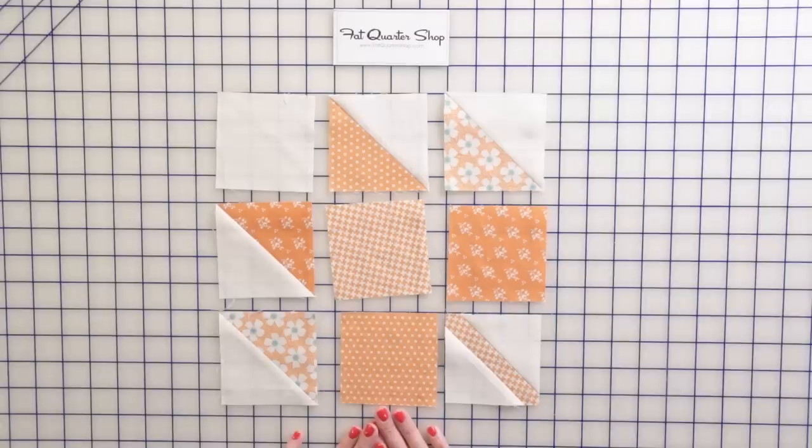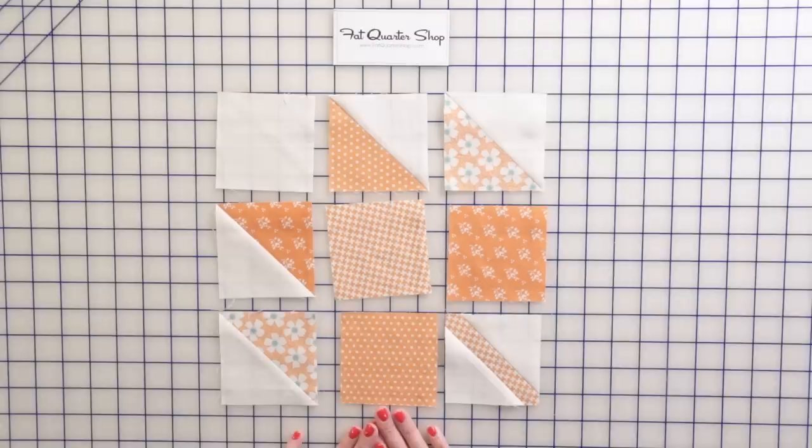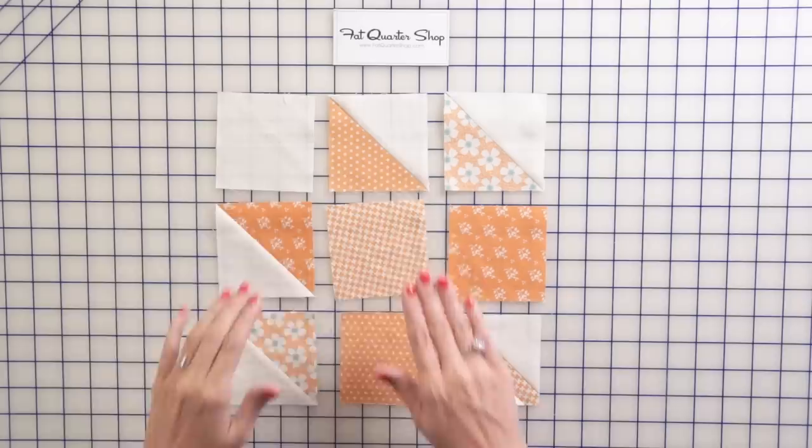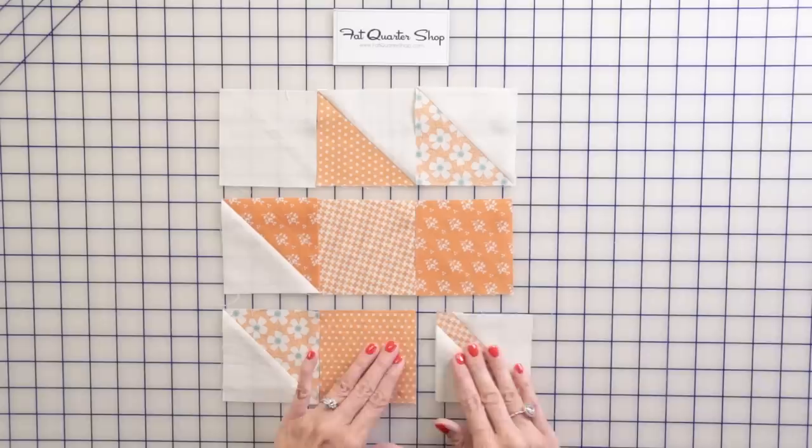I'm going to remove my alpha bitties and show you how I chain piece a block. So we're going to go to the machine and I'm going to chain piece this and stop. Then I'm going to chain piece this and stop and we're going to press. And then I'll show you the next step.